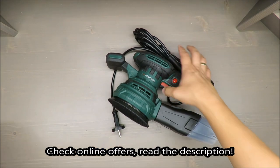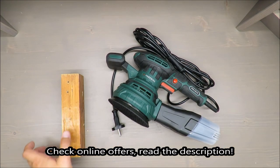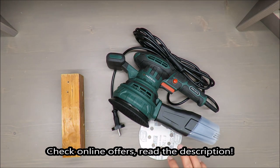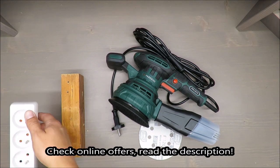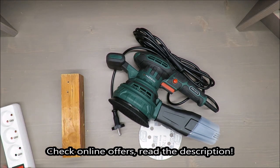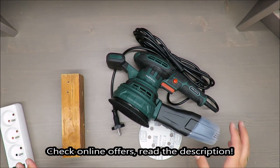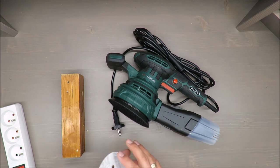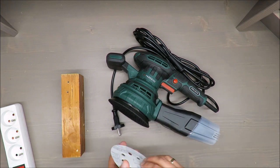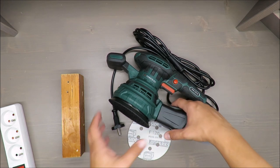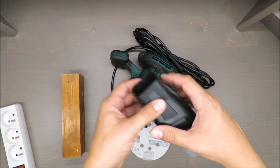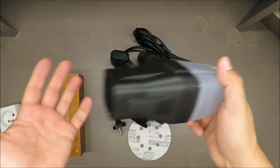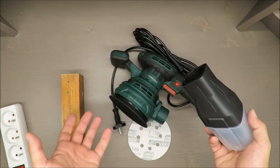Hello everybody, this is Out of the Box unboxing. In today's episode, I'm going to review this random orbital sander from Parkside, available in Lidl. On the beginning, my opinion: okay, decently made. You cannot expect high quality for such a low price, but you get everything what you need.